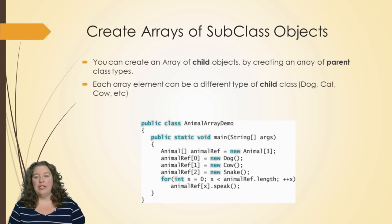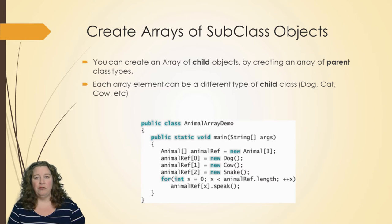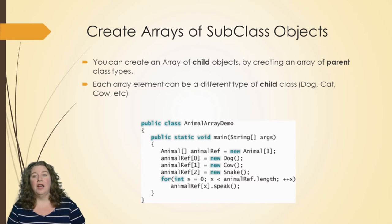Each array element can be a different type of child class, and that's fine — dogs and cats are all base-class animals as their parent. We were able to create an animal reference array, add our dog, cow, and snake, and then run through a for loop where each called the speak method, which they all had to have because they were all animals. That is creating arrays of subclass objects, one of the great things about inheritance.